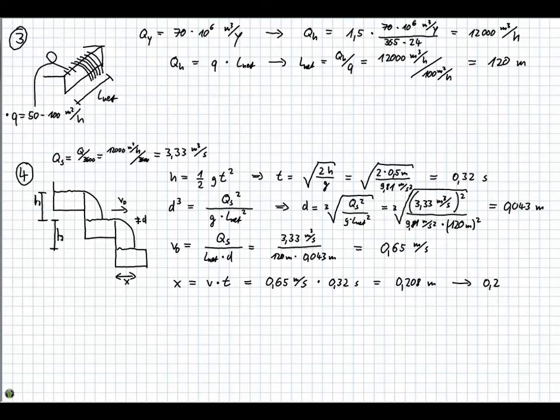And we're going to make this 0.2 meters, since we're designing the cascades. We want to have a rounded value, and those 8 millimeters don't really make a difference when we design the cascades.